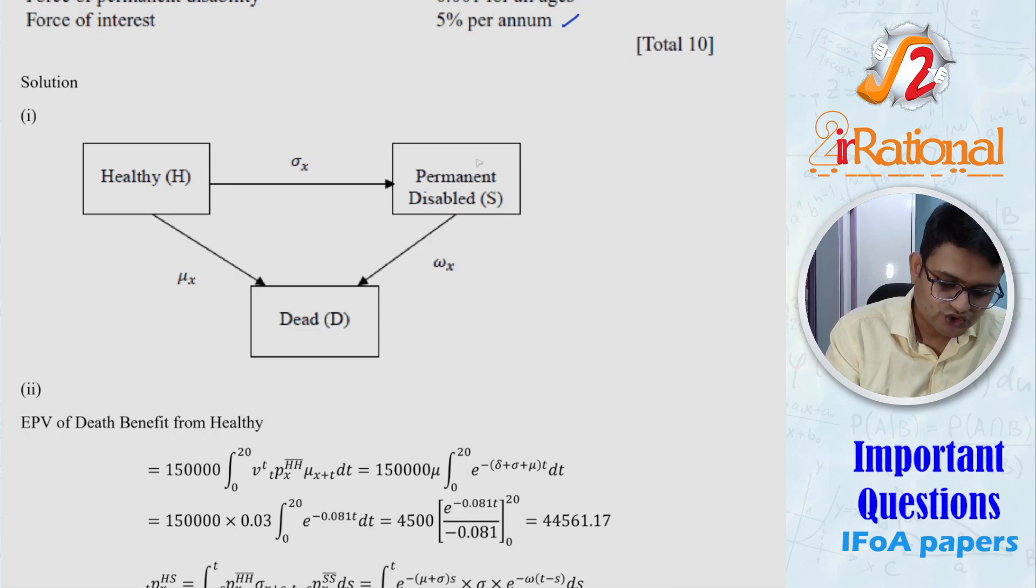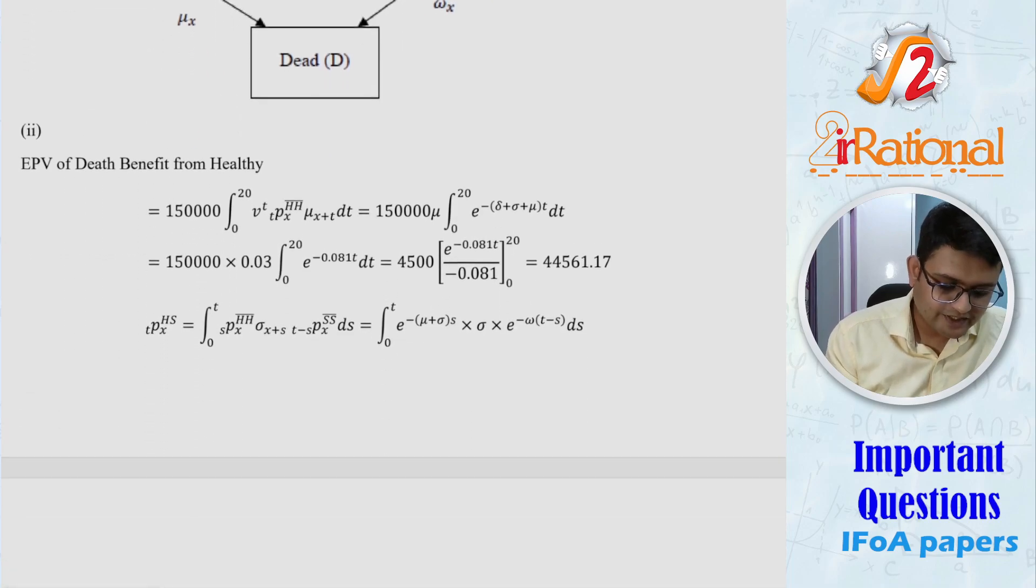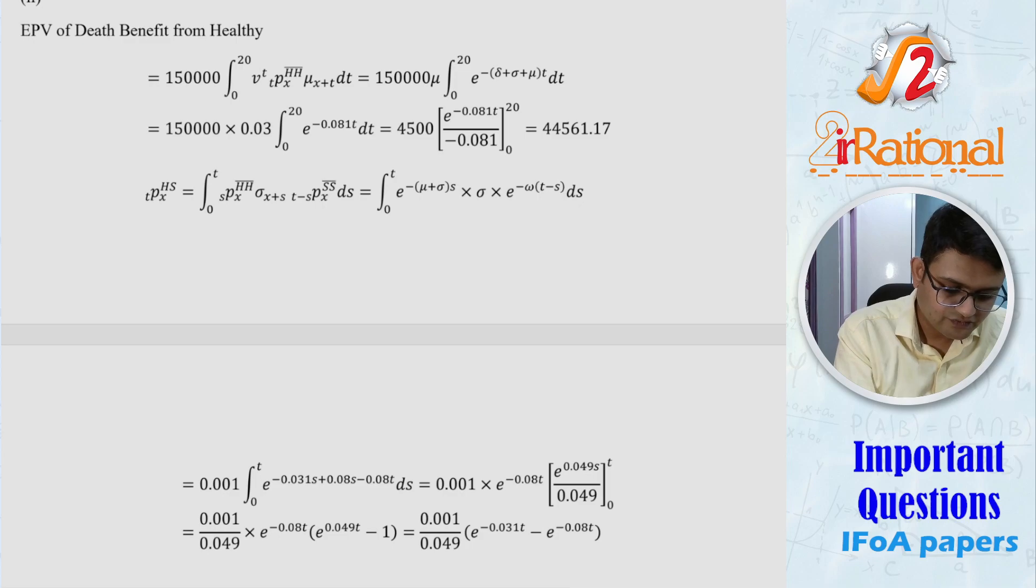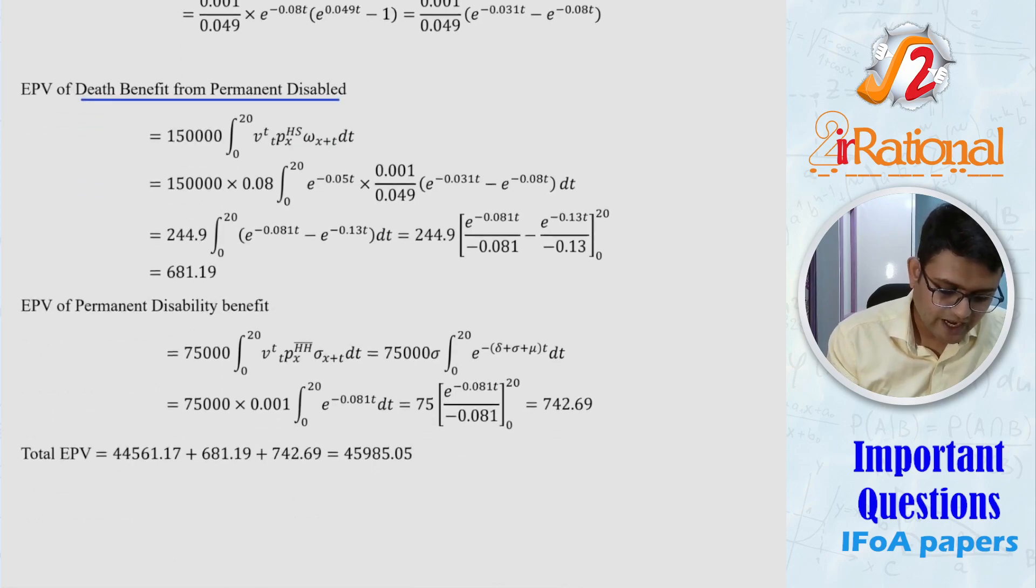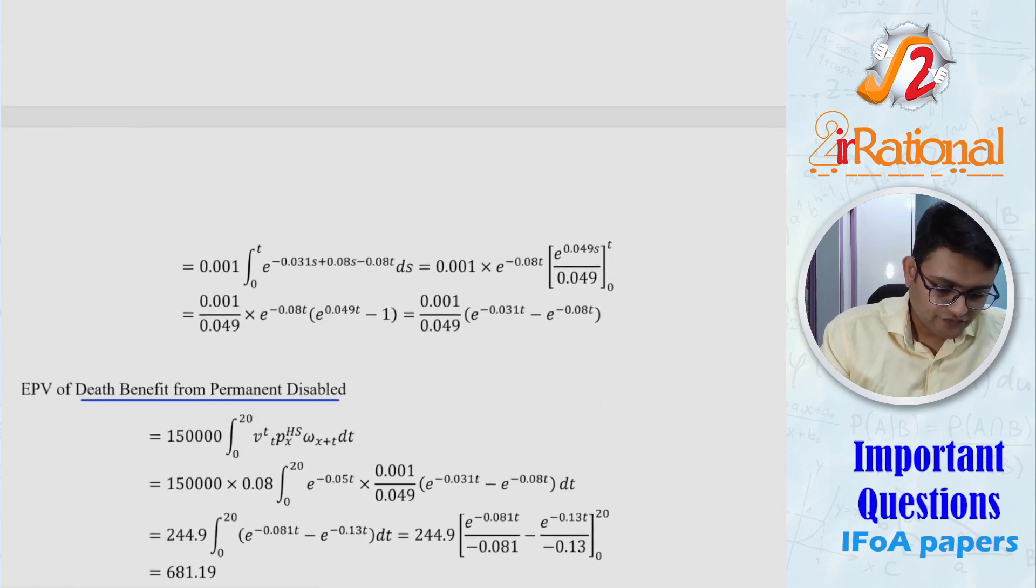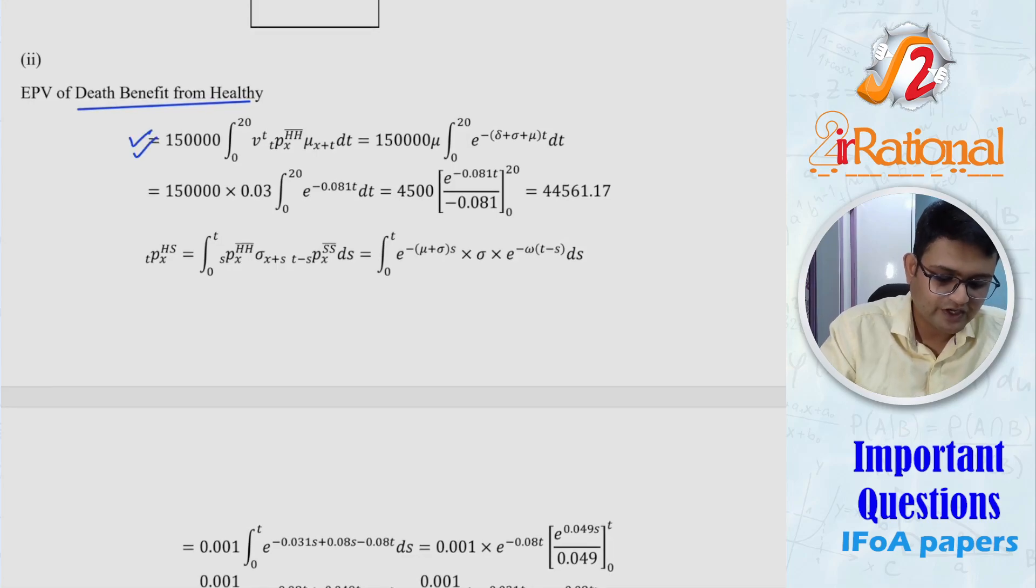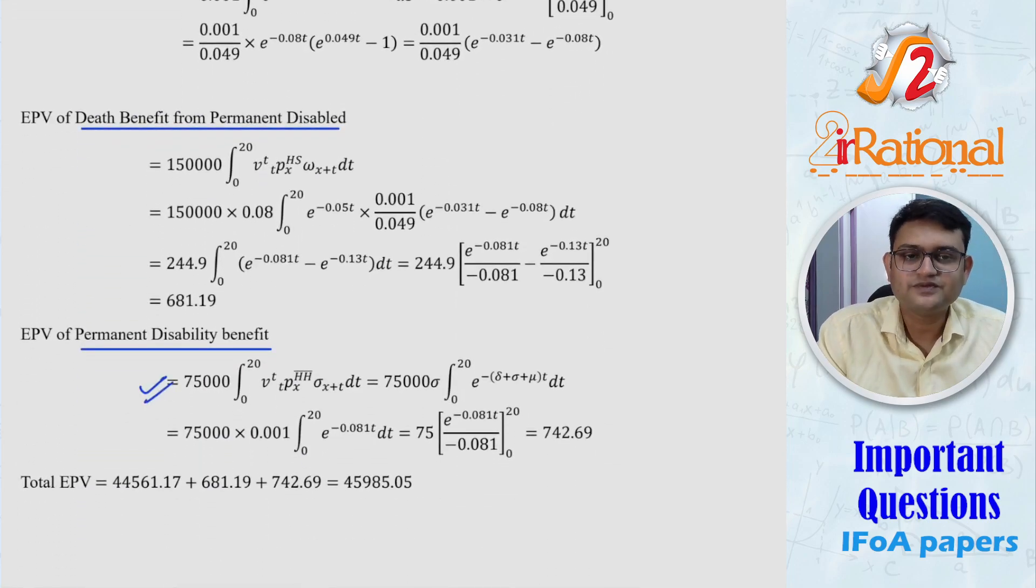So till now the question seems very straightforward. The only thing that you should be concerned about is this permanent disabled. Now because here we have permanent disability, that just means the transition from the sick state to healthy is not possible. This will not be possible and that will be helping us later on to calculate the expected present value. So we will split this expected present value in three parts: death benefit from healthy state, death benefit from permanent disabled, and expected present value of permanent disability benefit.